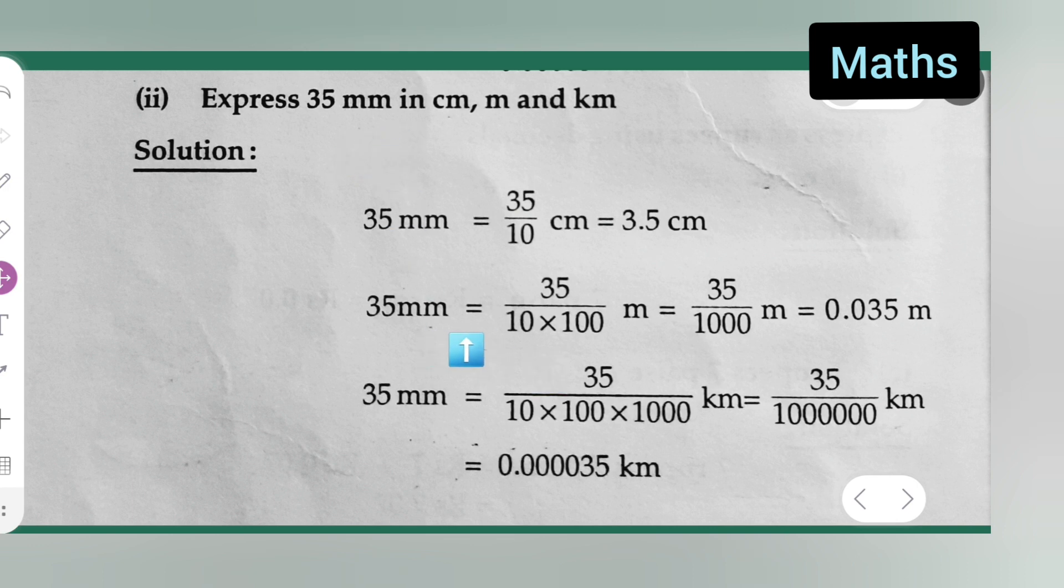35 millimeters equals 35 divided by 10 multiplied by 100 meters, which equals 35 divided by 1000 meters. The decimal point will come in the third place: 1, 2, 3, which is 0.035 meters. Next, I have to convert this 35 millimeters into kilometers.